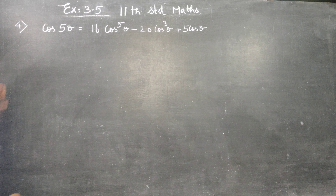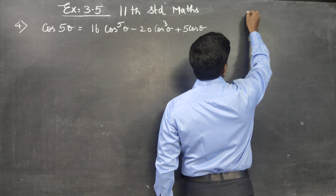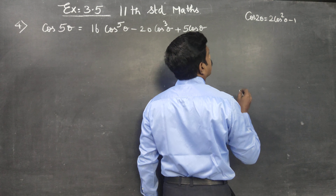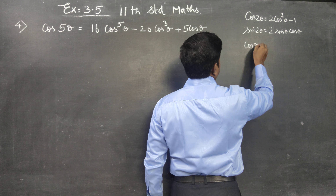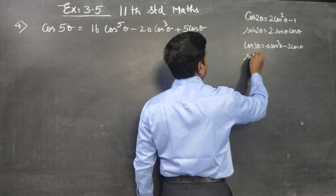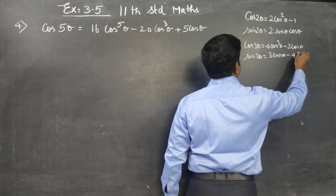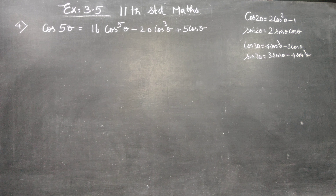Class 11 standard, sum number 4 — we have to prove this. For proving this you must be very familiar with the multiple angle formulas. The first formula is cos2θ = 2cos²θ - 1. sin2θ = 2sinθcosθ. This is the sin multiple angle formula.